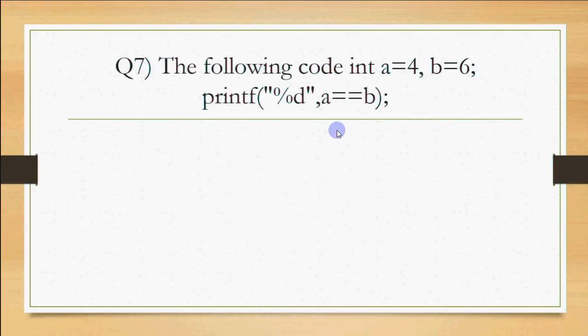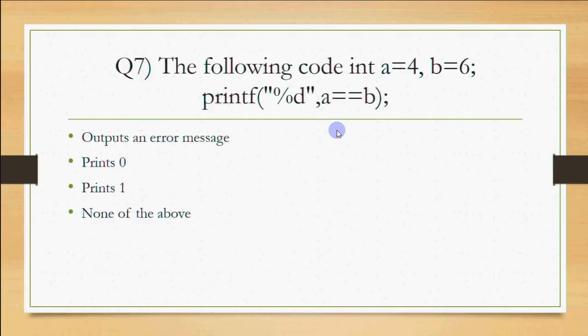Next question: the following code sets int a=4 and b=6, then printf("%d", a==b). What will it print? Options are: outputs an error message, prints 0, prints 1, or none of the above. The %d means we are printing an integer. The expression a==b uses the relational (equality) operator — a double equals sign — which checks whether a equals b.